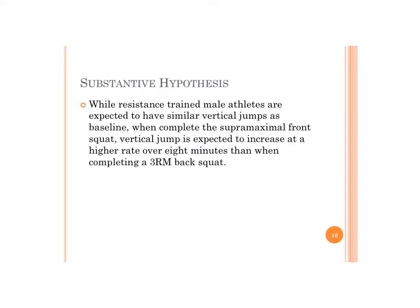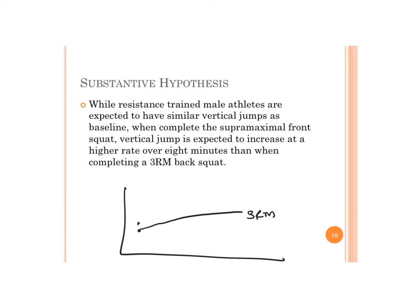His substantive hypothesis was that resistance-trained males would have similar jumps at baseline, but after completing the super-maximal front squat, vertical jump height was expected to increase at a higher rate over the eight minutes compared to the 3RM back squat. On an interaction chart, both groups start similarly, with some effect in the 3RM condition, but a much larger increase expected in the super-maximal front squat, producing a significant interaction.